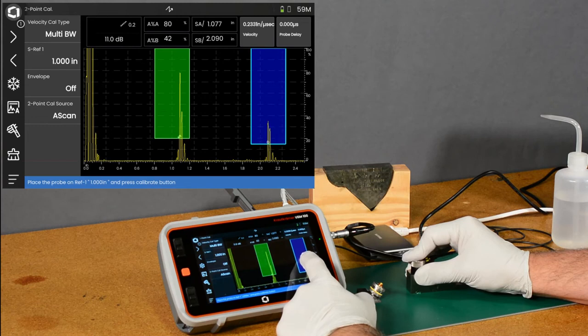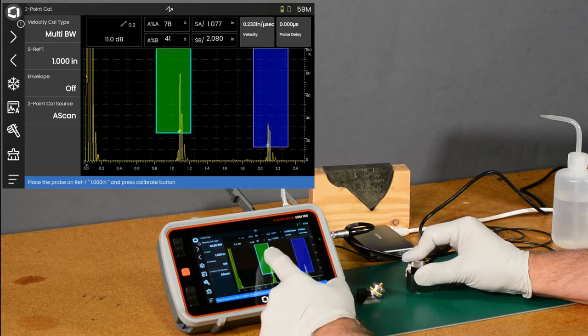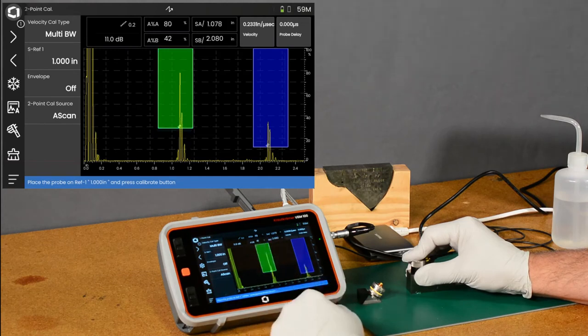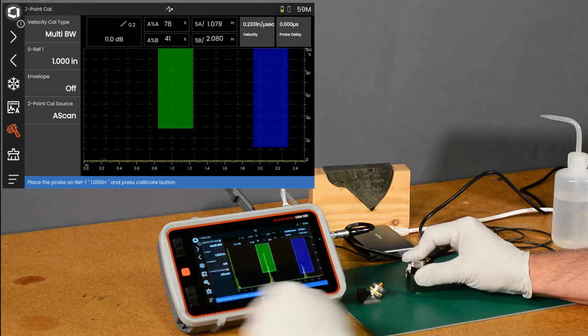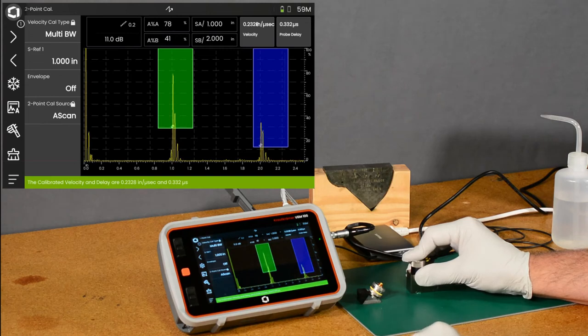I'm going to drag my gate B here, so it's about the same place on the flank as gate A. And all I need to do is hit the calibrate button, and our calibration completes.